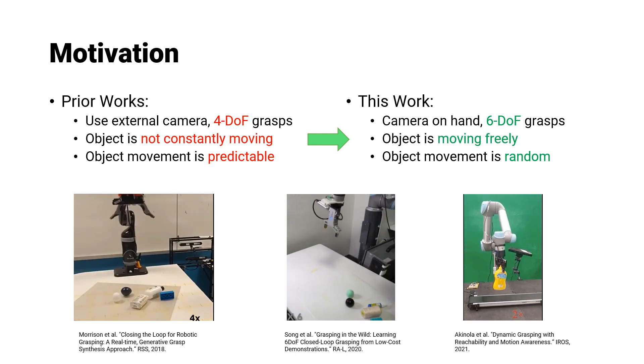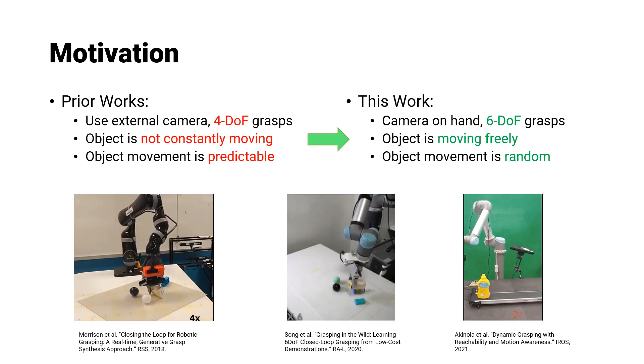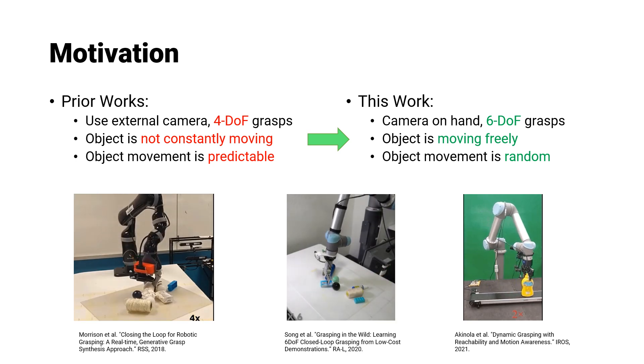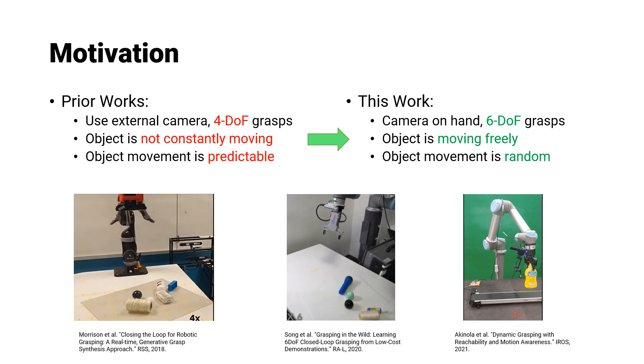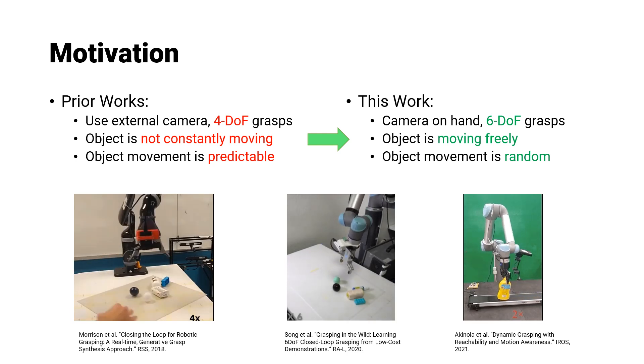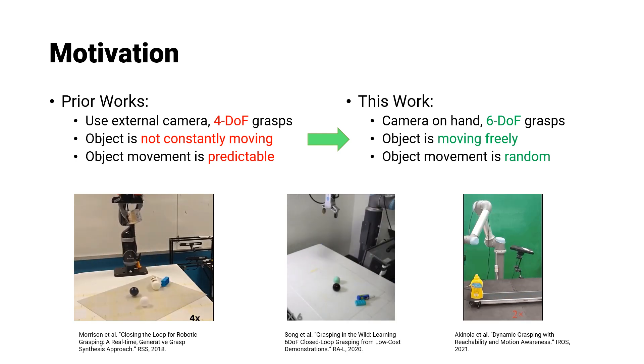Additionally, the object and environment are often assumed to be subject to minor alterations. There is also a line of works focused on predictive algorithms to anticipate object movement for more effective grasping. Our research aims to avoid such assumptions to develop a more complete system.